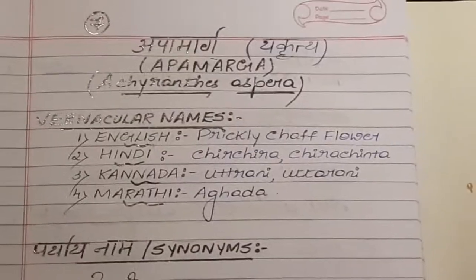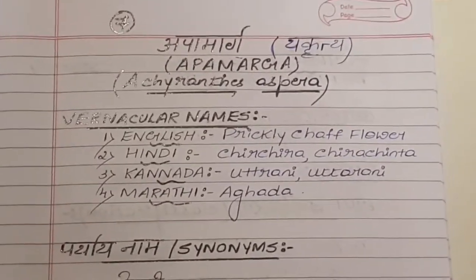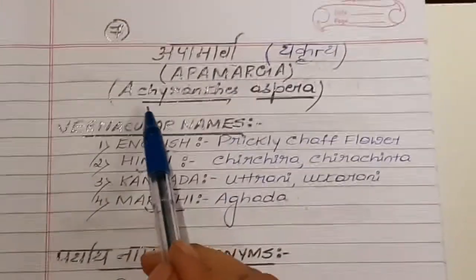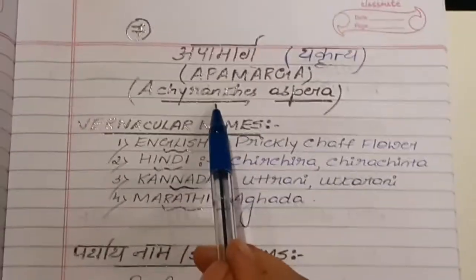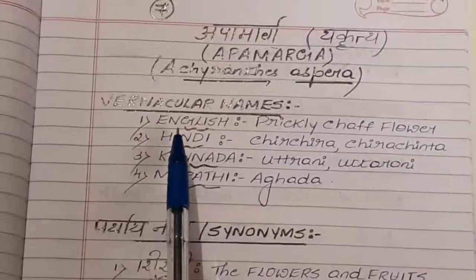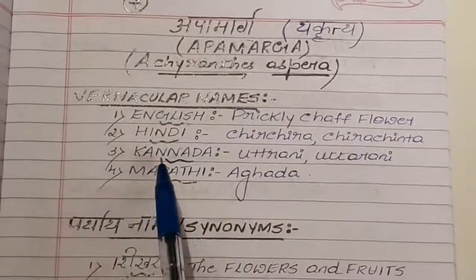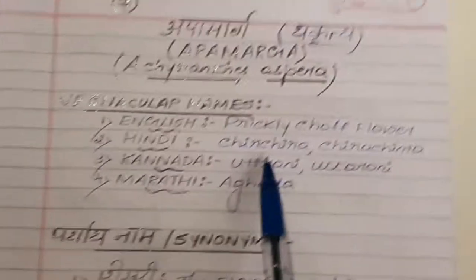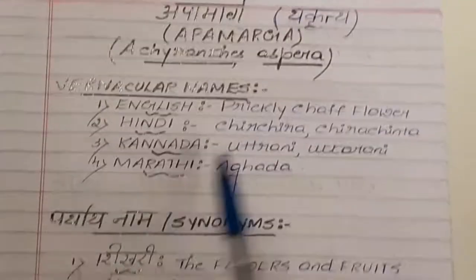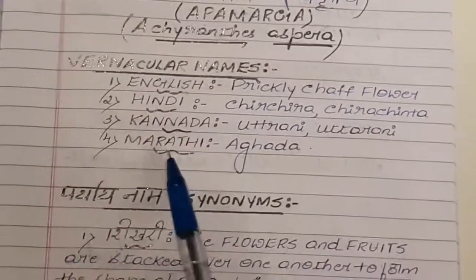Hello guys, welcome to BMS. Today we'll be learning about the topic of Apamarga in Dravyaguna. It is nothing but Achyranthes aspera. Coming to its vernacular names: in English it is known as Prickly Chaff Flower; in Hindi it is known as Chichira or Chirachita; in Kannada it is known as Uttarani.